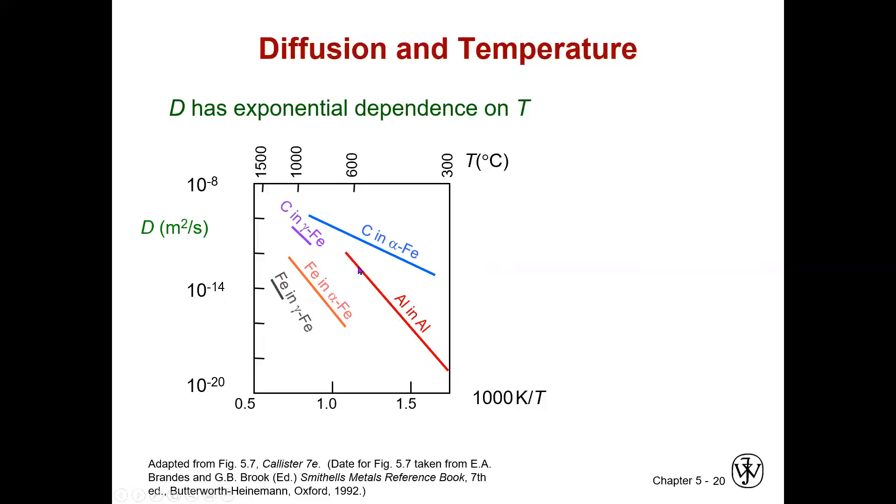Well, this is showing you the difference between interstitial diffusion, which is the carbon case up here. And since these are self-diffusion, then these have to be by a vacancy mechanism. So we have vacancy here and interstitial up here. So you can see the interstitial mechanism being faster, like we said earlier. Now you can see it in values.